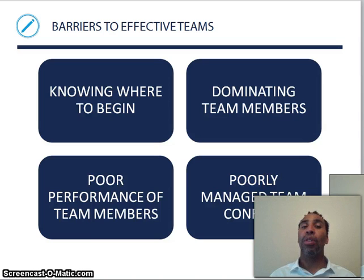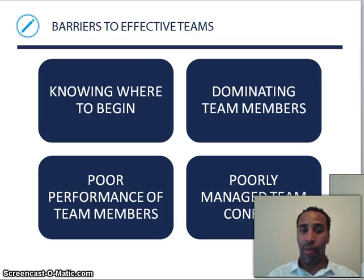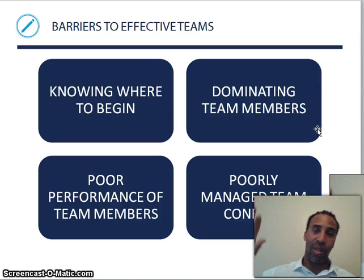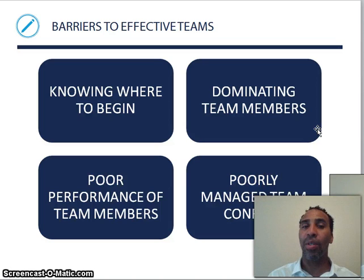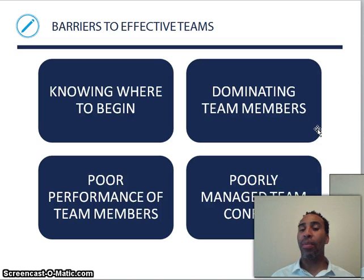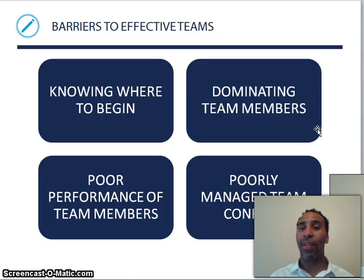Barriers to effective teams include: knowing where to begin; dominating team members — the person who keeps talking and won't let everybody else have a chance to share their opinion; poor performance of team members, which needs to be addressed — either give them feedback or possibly remove them from the group; and poorly managed team conflict, where a manager sits quietly and does nothing. You have to get in front of conflict and embrace it to move forward.